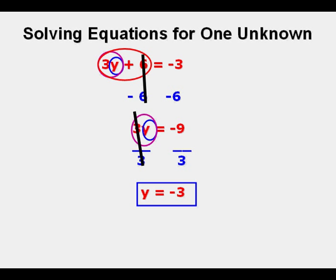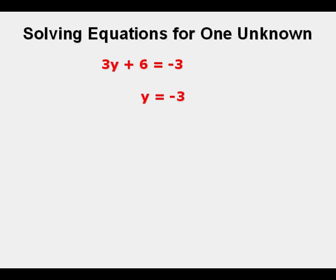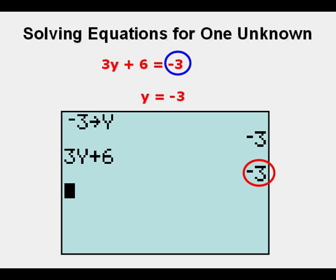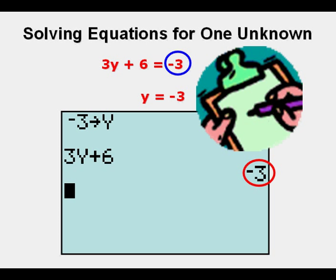Let's check our answer. We first store negative 3 for y, negative 3, then storage, then we press alpha, and then the one key, press enter, and then we enter the left side of the equation, 3y plus 6, and we see that equals negative 3. Check.